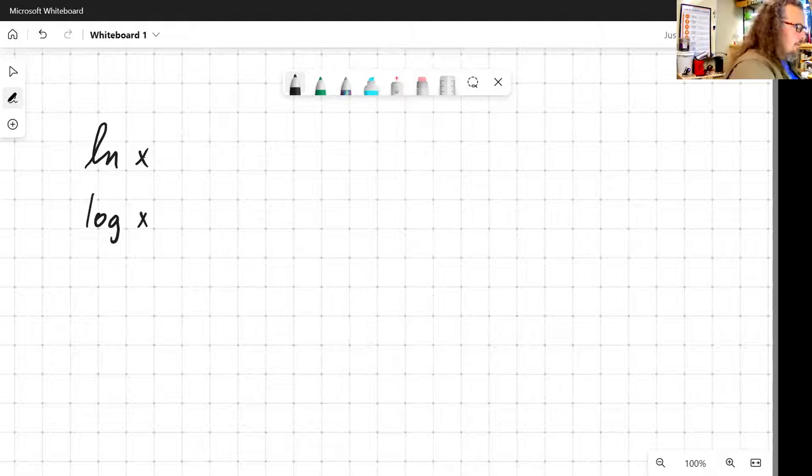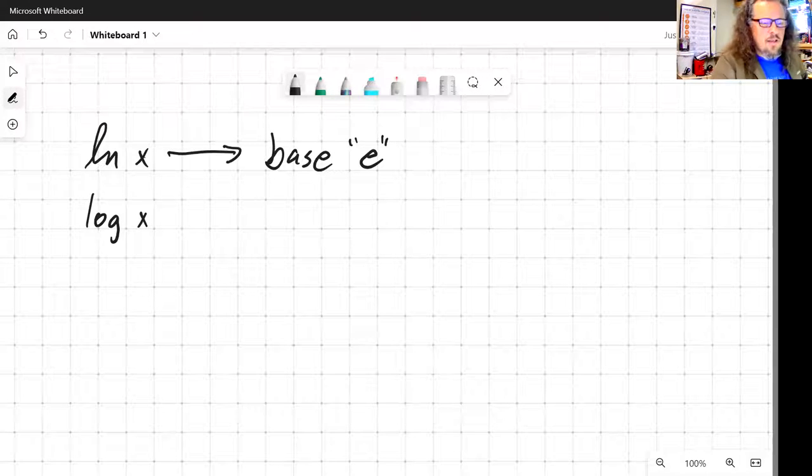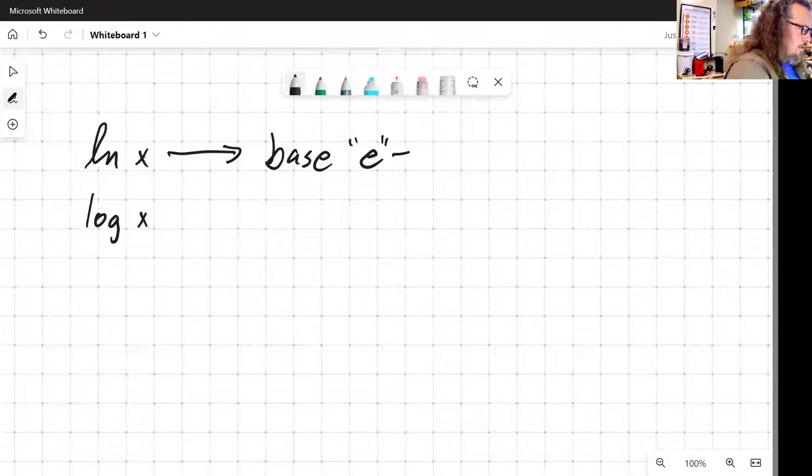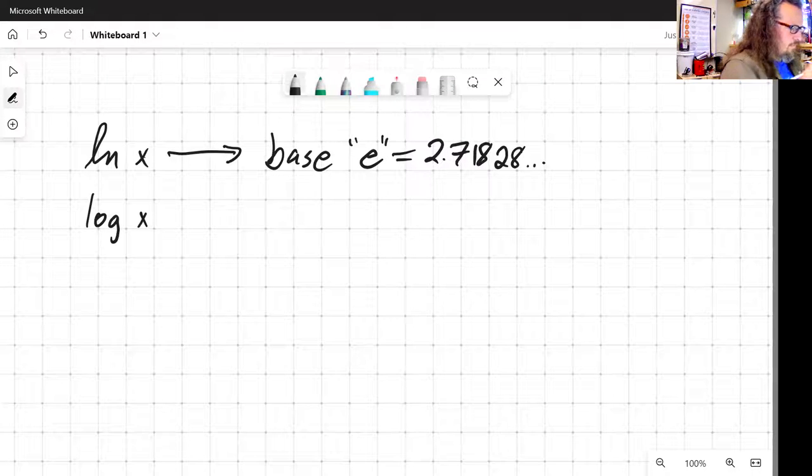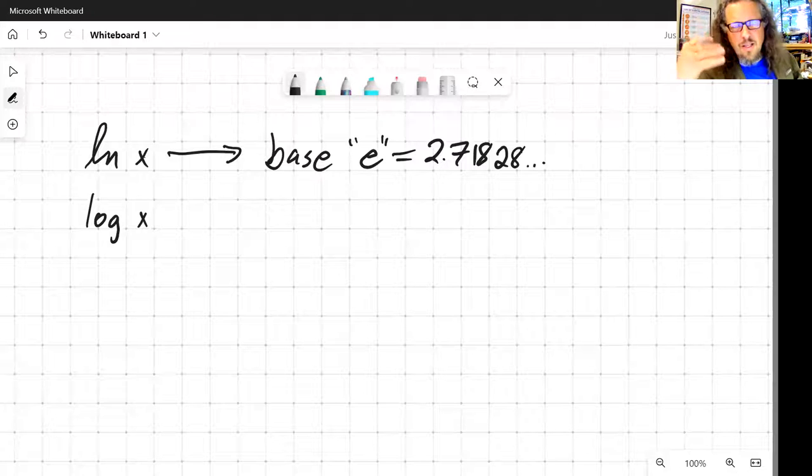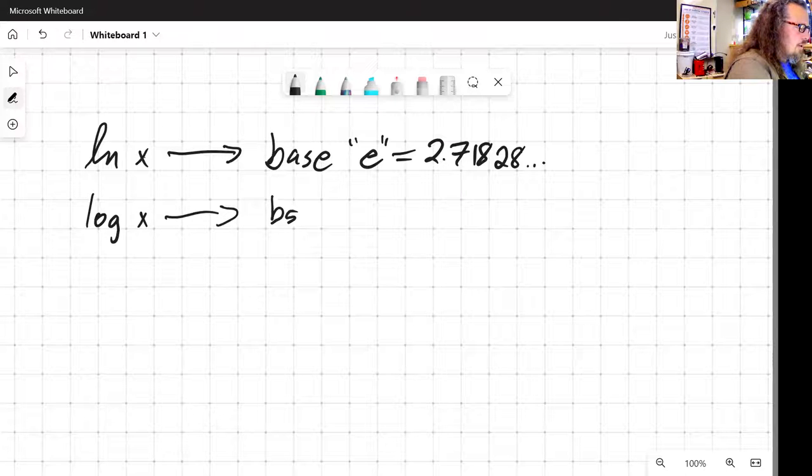So the difference between a natural log and a common log: natural logs are base e, and e is 2.71828, it keeps going. You can find it on your calculator. Not really an important number for you to necessarily know, but not a bad number to keep sort of in your mind as just sort of a scale of what we're talking about.